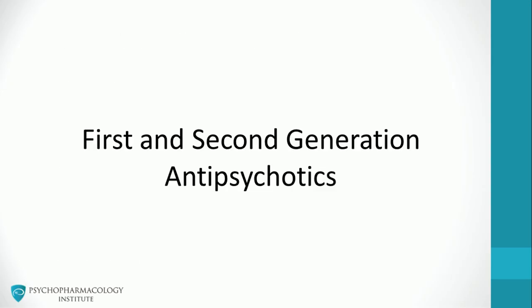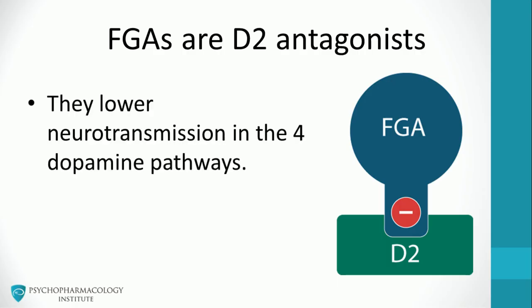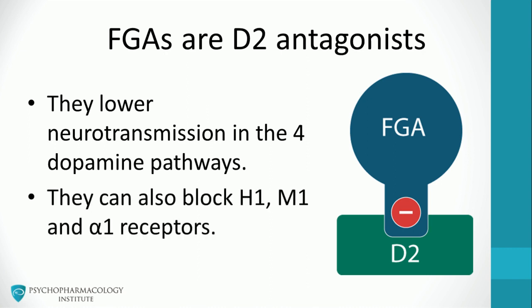Let's discuss the mechanism of action of first and second generation antipsychotics. First generation or conventional antipsychotics are D2 antagonists. They lower dopaminergic neurotransmission in all four dopamine pathways. In addition, they can also block other receptors such as histamine-1, muscarinic-1, and alpha-1, among others.